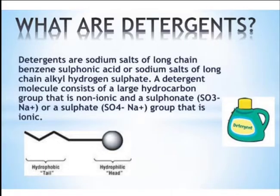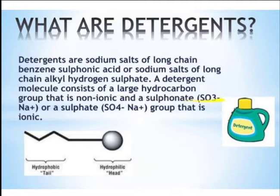Detergents look like soaps but their properties are somewhat different. Detergents are sodium salts of long-chain benzene sulfonic acid, or sodium salts of long-chain alkyl hydrogen sulfate. A detergent molecule consists of a large hydrocarbon group (non-ionic) and a sulfonate group SO₃⁻Na⁺ or sulfate SO₄²⁻Na⁺ (ionic). Again there is a hydrophobic tail and a hydrophilic head, and micellar formation occurs in the same way as with soaps.